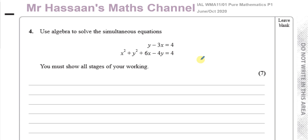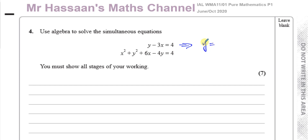In order to solve simultaneous equations, we need to take one of the equations and substitute it into the other. It's normally easier to take the linear equation and substitute it into the quadratic equation. It's also easier to pick the variable that does not have a coefficient — here that's y — and make y the subject. Adding 3x to both sides gives y equals 3x plus 4.